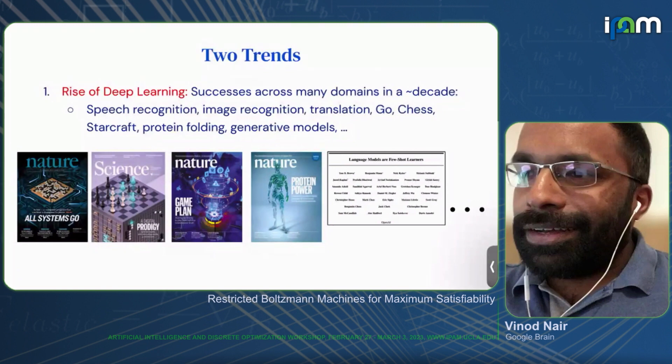I'm going to start out by saying something that's super obvious to this audience, but I think it's nice to start with something obvious. There are two big trends happening in machine learning. One is the rise of deep learning — we've heard of all the amazing applications across so many different domains, all the way from speech recognition, image recognition, translation, various games, proteins. And now we have these amazing generative models that are making a lot of news.